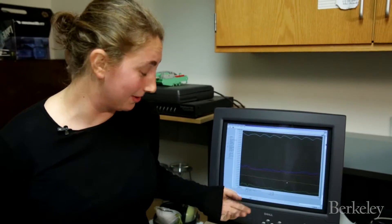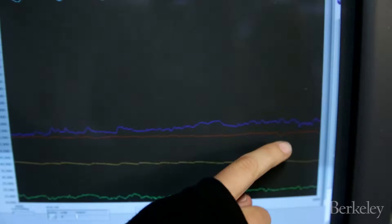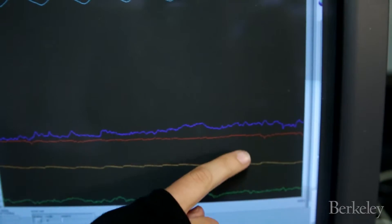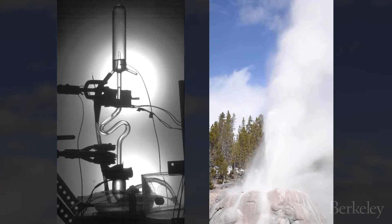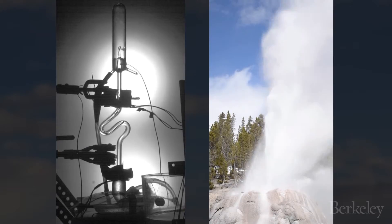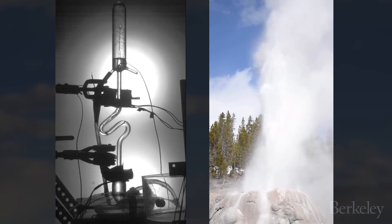There's no eruption at the moment, but we can see these little fluctuations in the top and bottom temperature recordings. And those are the signatures of bubbles rising up through the conduit and they're transferring heat. And that's a temperature change.